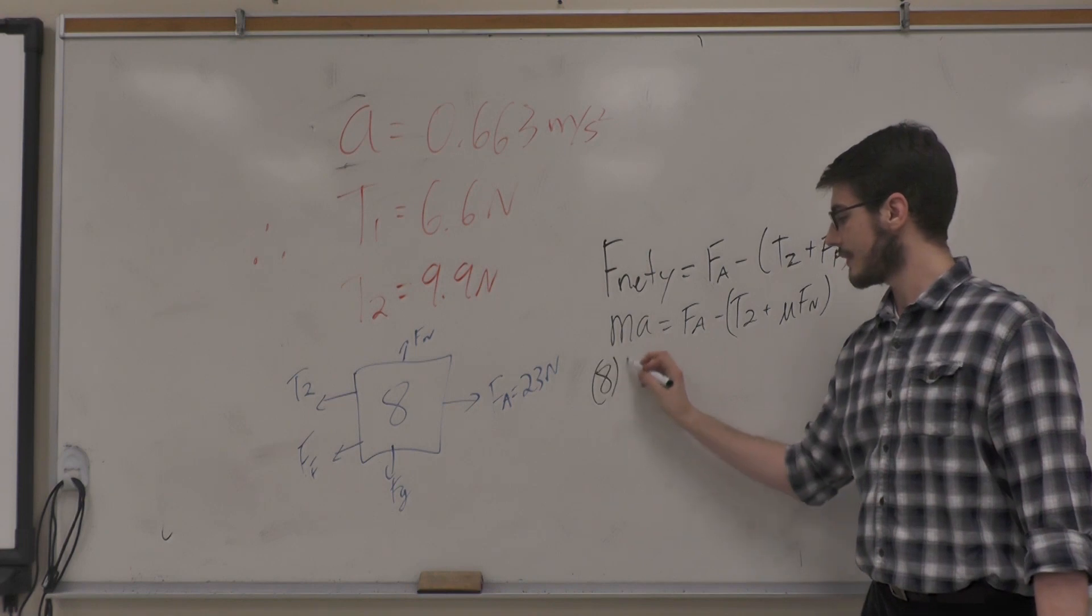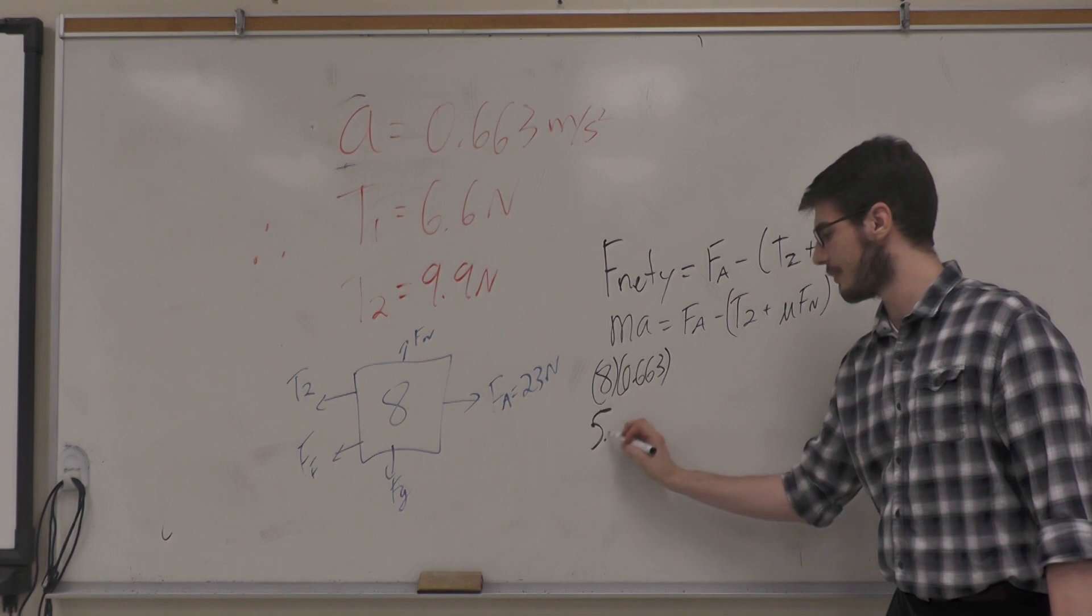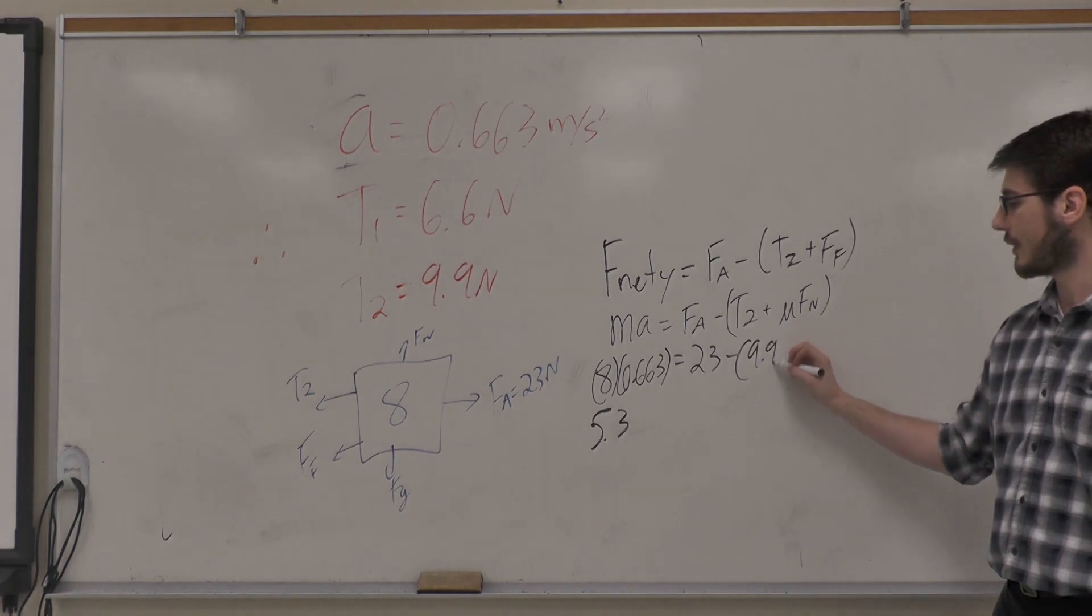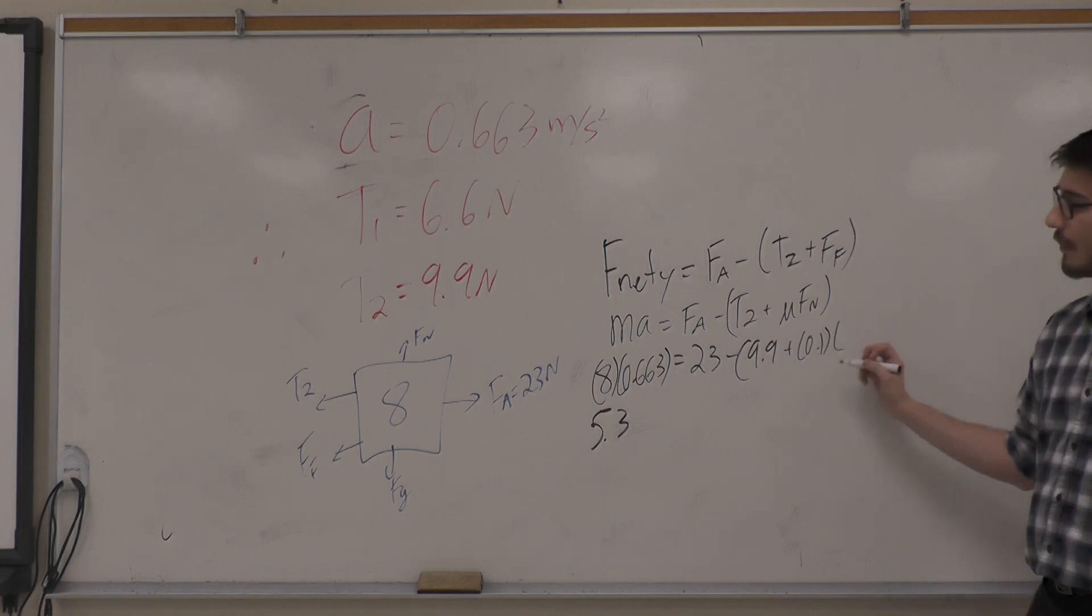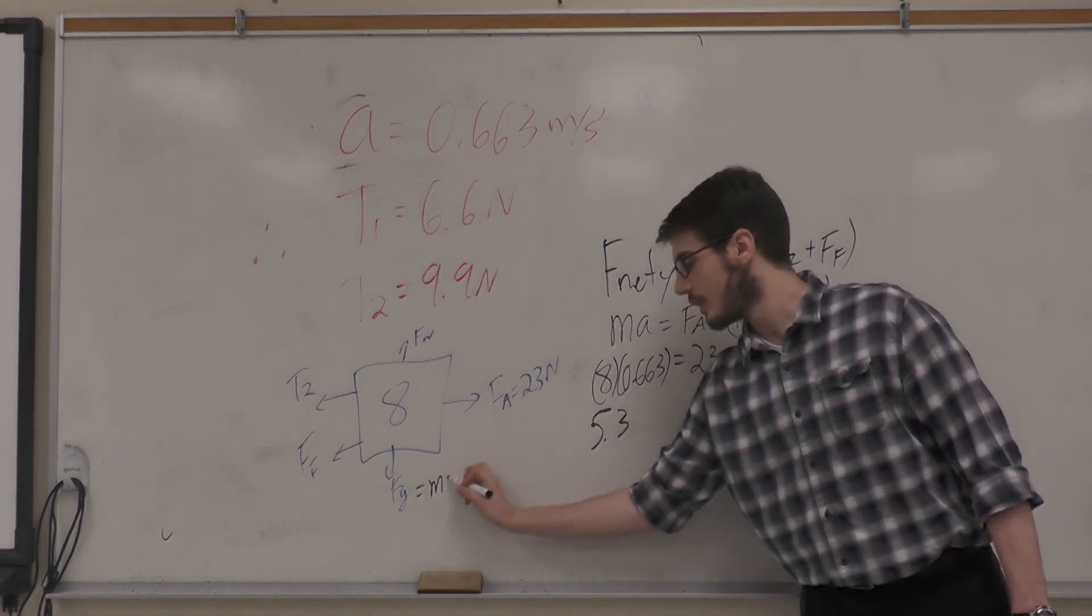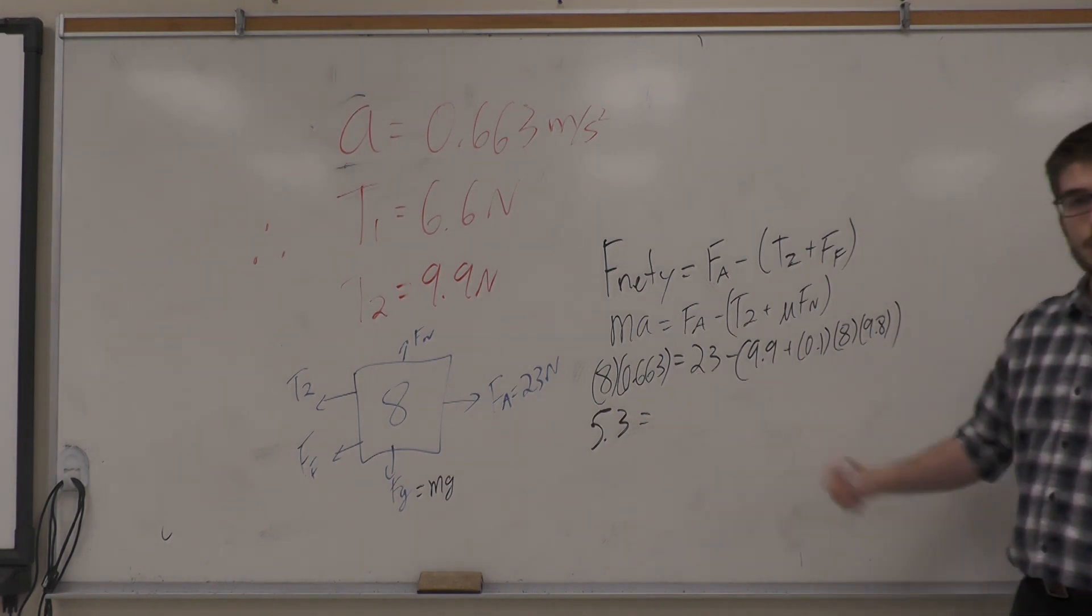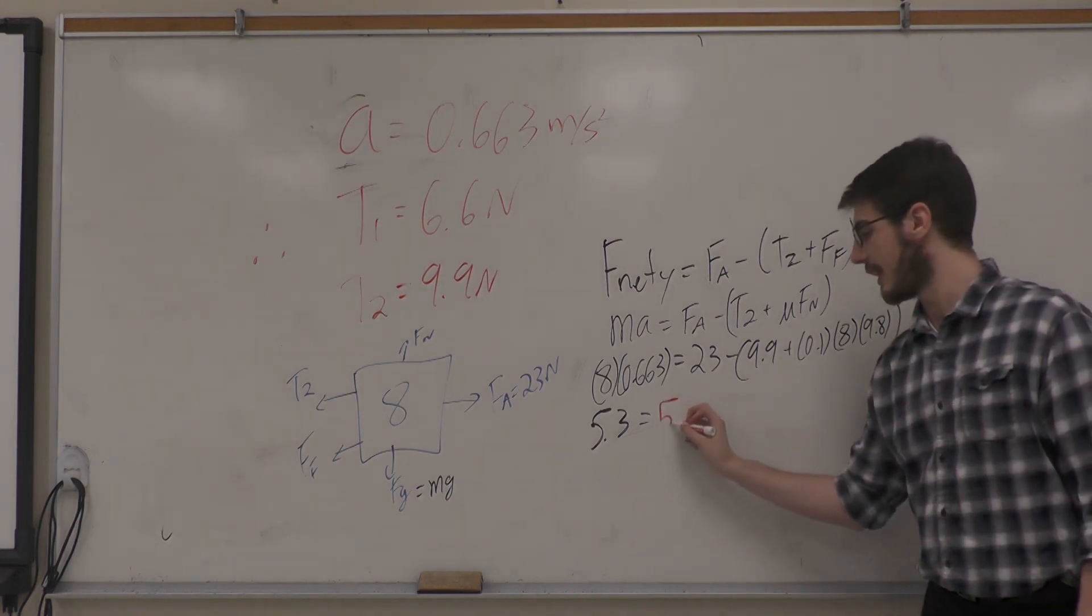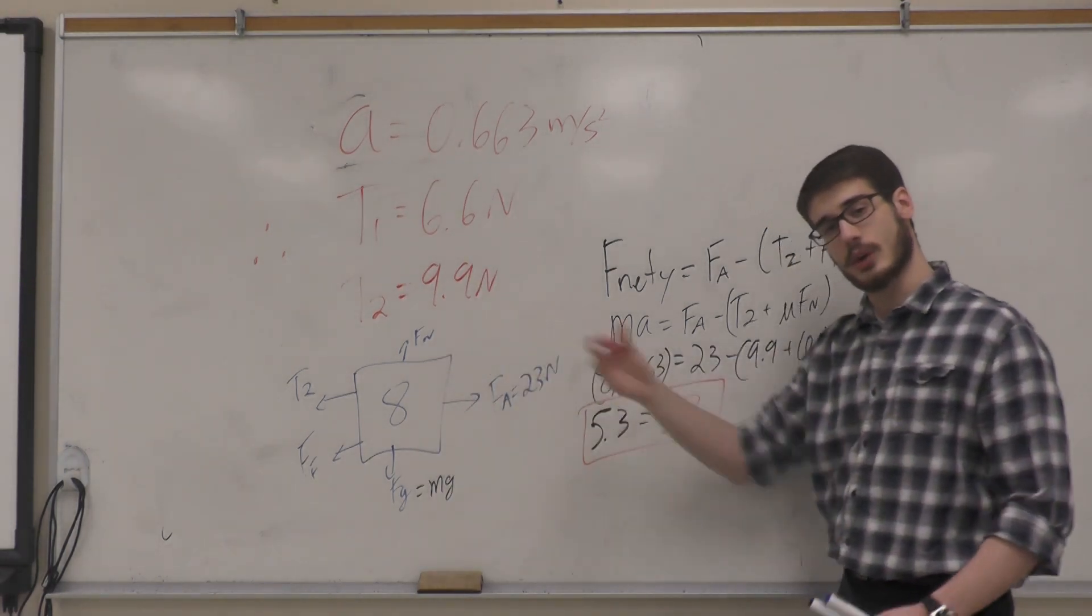So what we have is F net equals ma, force applied, tension 2, and mu Fn. Ma is the mass times the system's acceleration, which will give us a value of about 5.3. If we look on the other side, we have 23 minus 9.9, which is the tension rounded from the second value, plus 0.1 multiplied by mg. If we look at all these values, 23 subtracted from all of these terms, we'll see that the answer will also be equal to 5.3 after rounding, showing us that our results worked out because the last cart still holds.